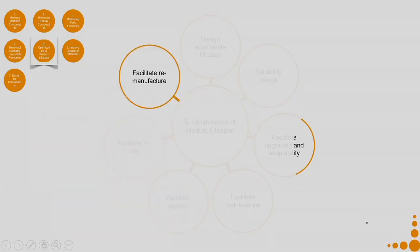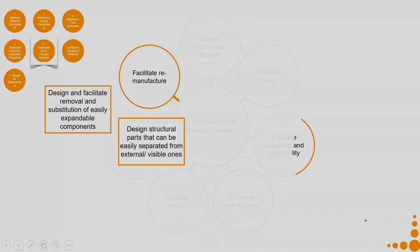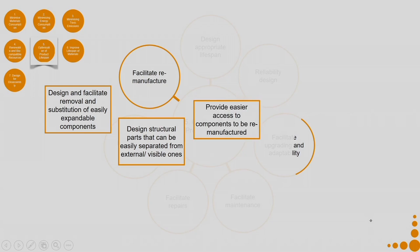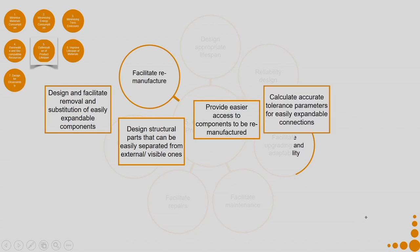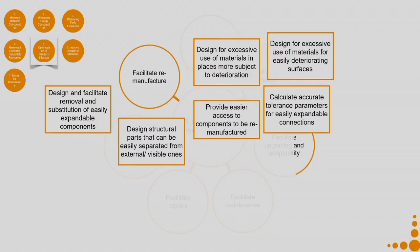Then coming to facilitate remanufacture: design and facilitate removal and substitution of easily expendable components, design structural parts that can be easily separated from external or visible ones, provide easier access to components to be remanufactured, calculate accurate tolerance parameters for easily expendable connections, design for excessive use of materials in places more subject to deterioration, and design for excessive use of materials for easily deteriorating surfaces.